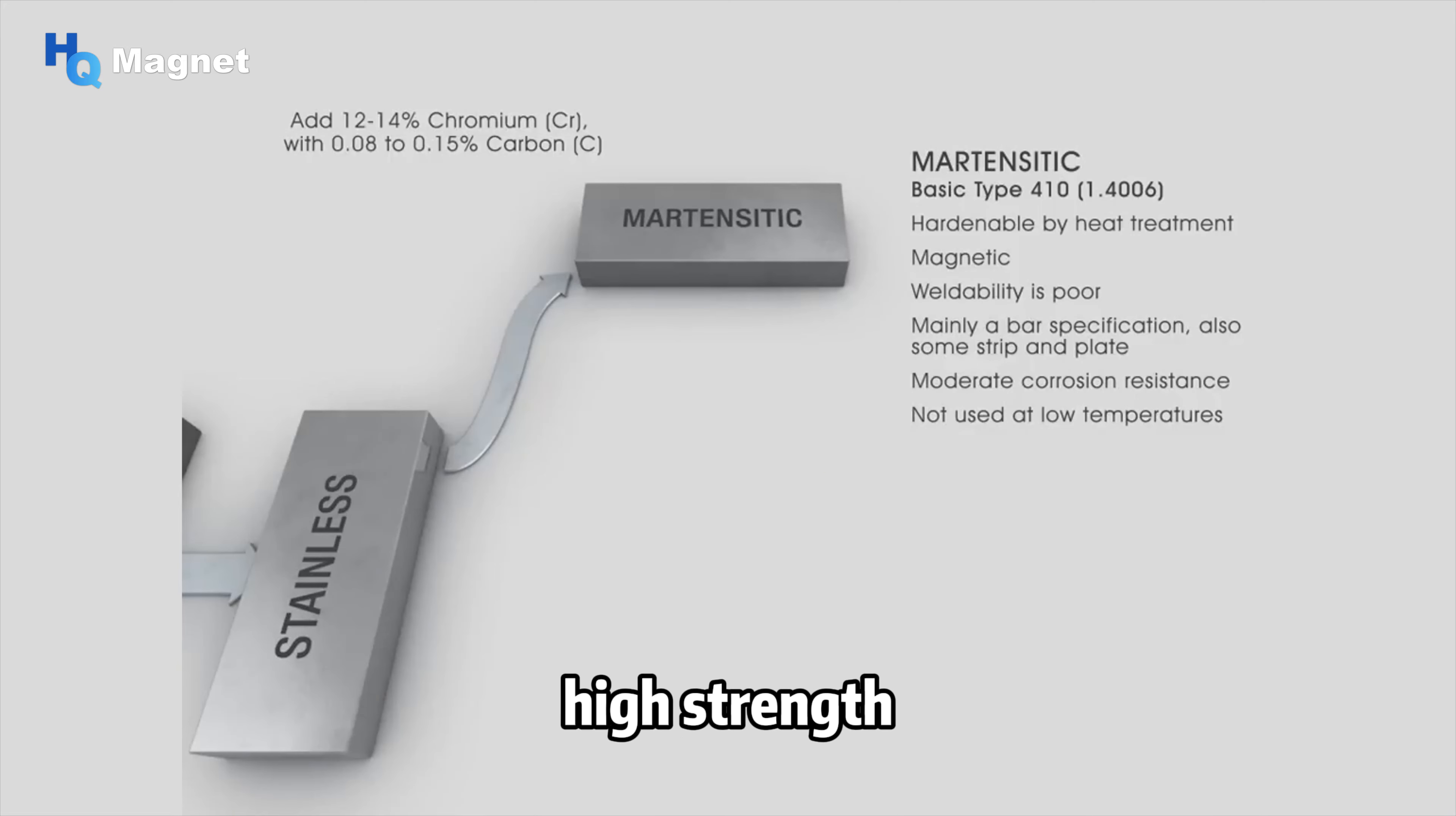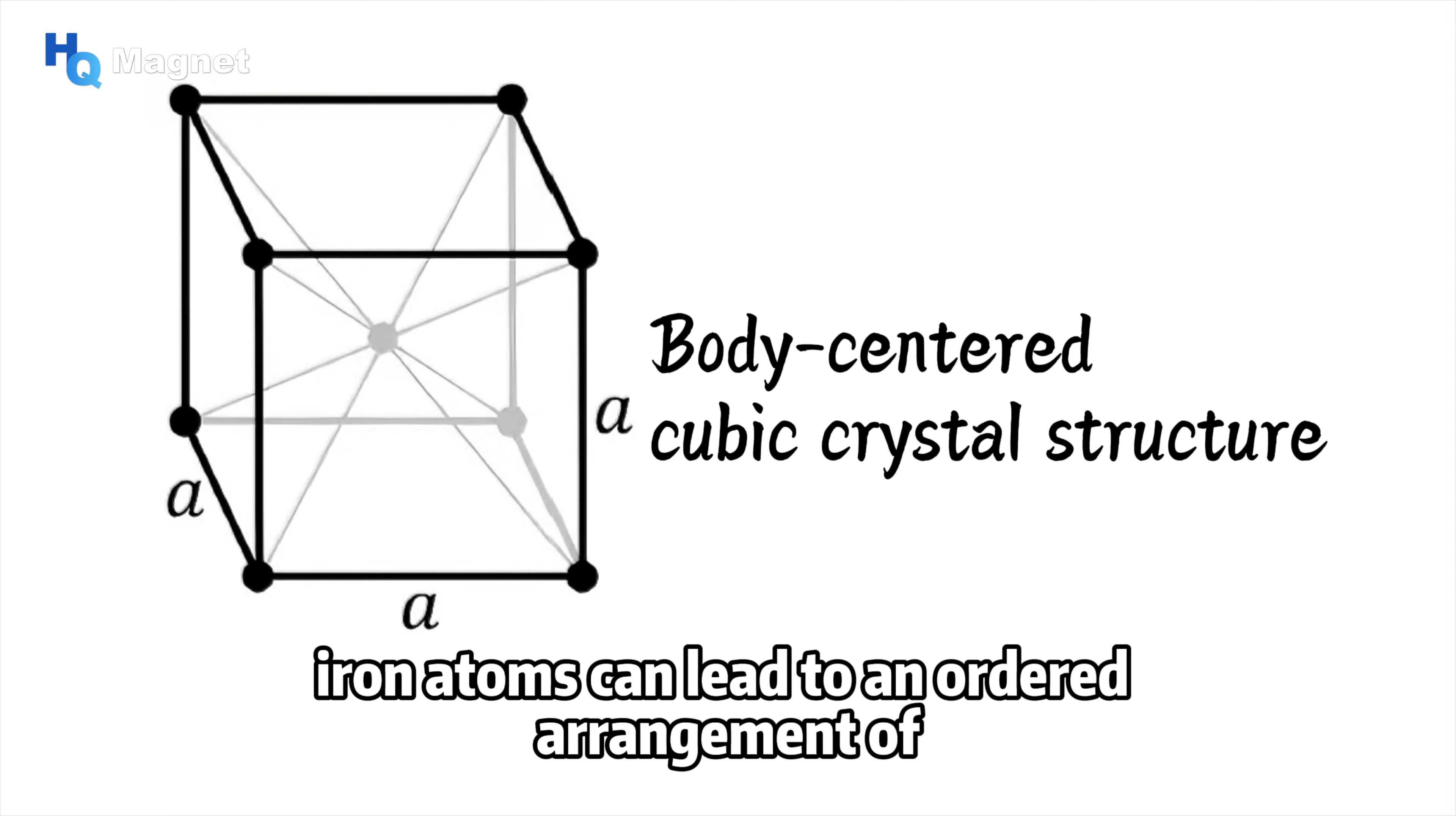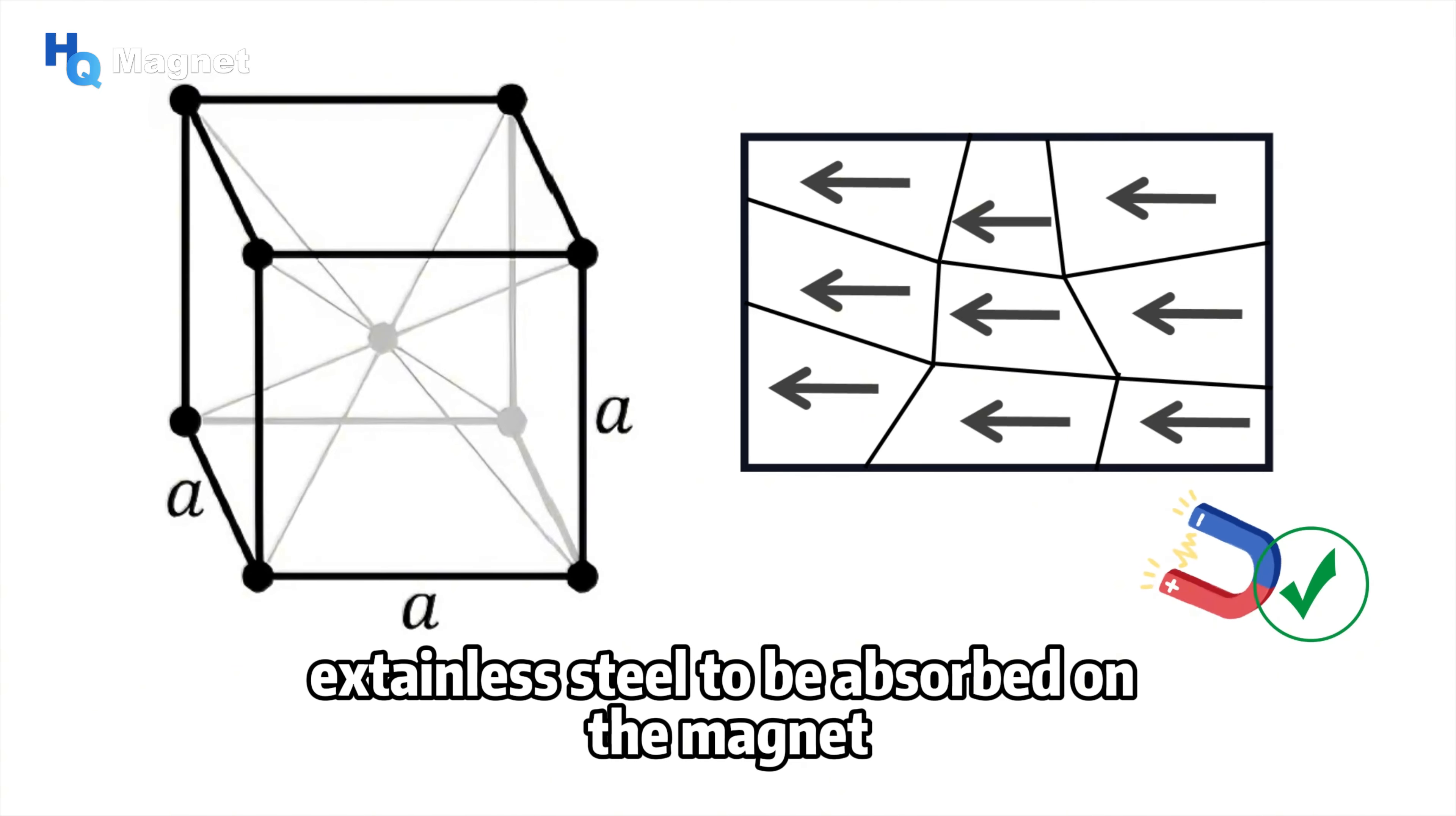Martensitic stainless steel has a body-centered cubic crystal structure with eight iron atoms at the corners of the cube and one atom at the center. The eight iron atoms at the corners are closely aligned with the central atom. The interaction between iron atoms can lead to an ordered arrangement of electron spins. This arrangement allows the magnetic moments between iron atoms to interact and form magnetic domains. Under the action of an external magnetic field, the magnetic moments of these magnetic domains will align along the direction of the magnetic field, causing the martensitic stainless steel to be adsorbed on the magnet.